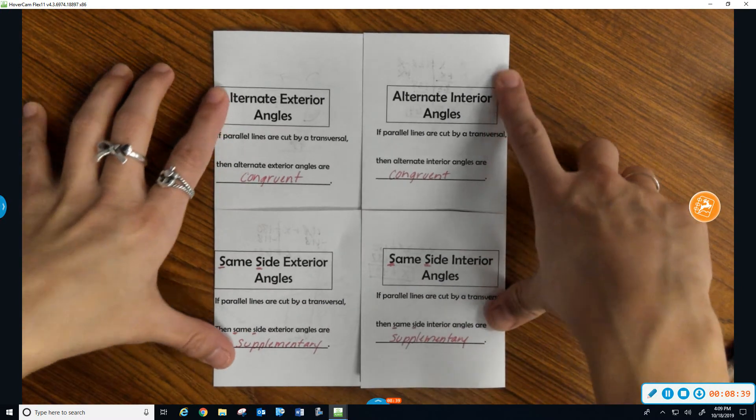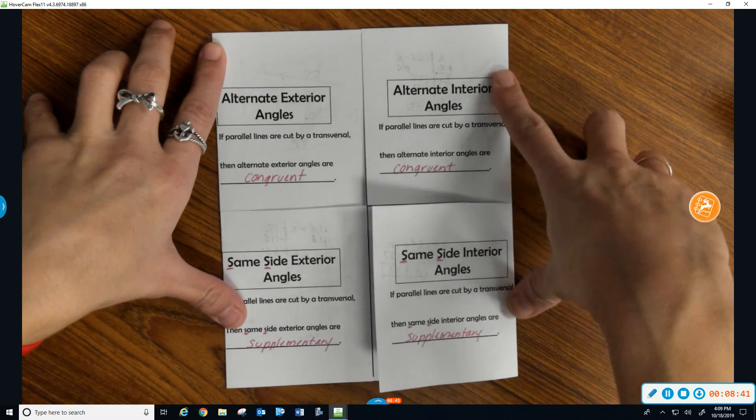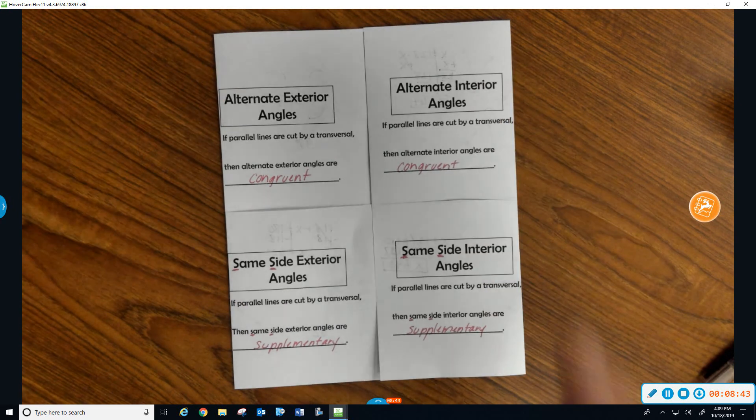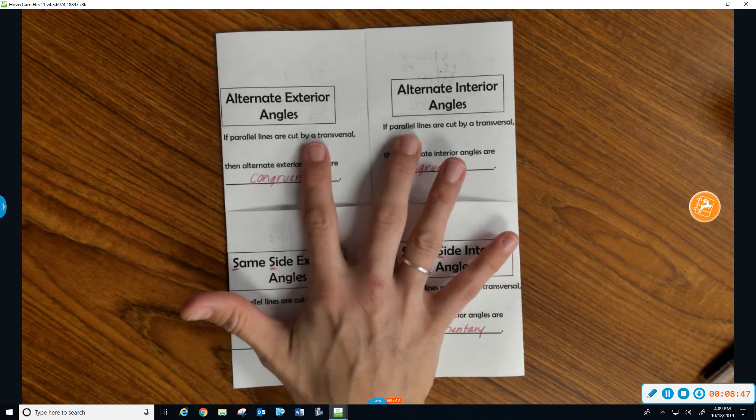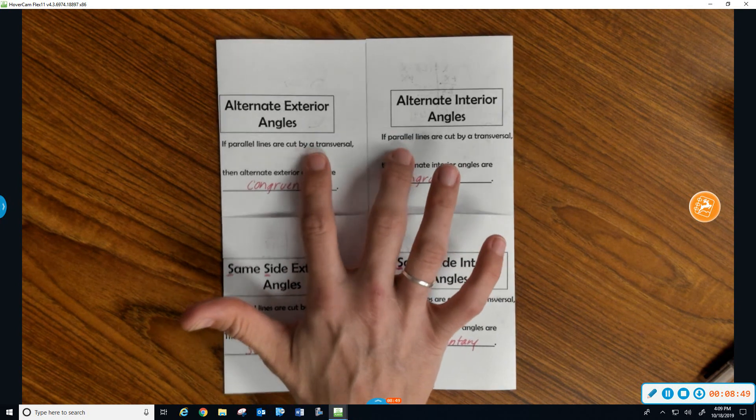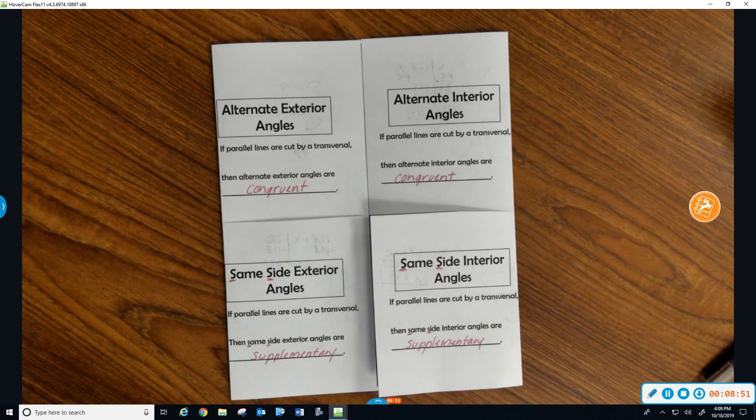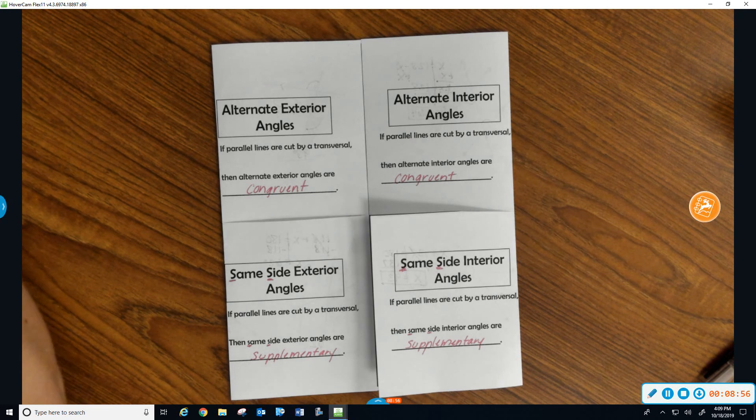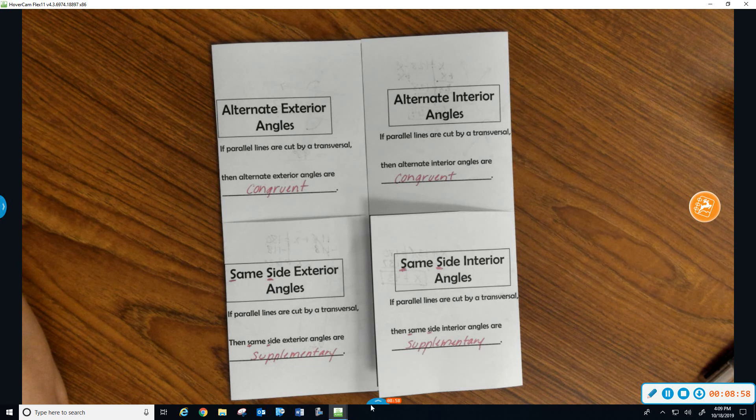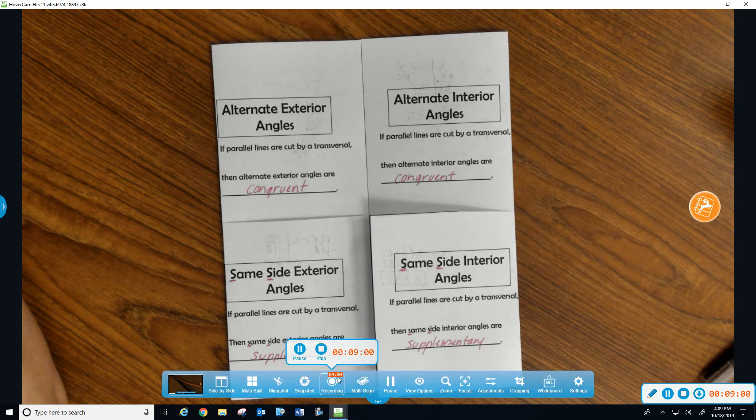And that's the algebra part of it. We did not do the corresponding, but corresponding we know are going to be congruent, corresponding congruent, the C's in corresponding and congruent. So you would do the same process. If you recognize corresponding angles, do the same process we did here with the alternate interior and exterior angles. That is the finish of the notes. And I wish you good luck on the assignment that you have. Thank you.